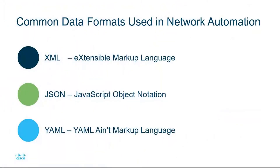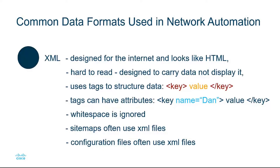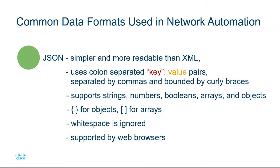The common data formats used in network automation are XML, JSON, and YAML. XML was designed for the internet and looks a lot like HTML. It's generally hard to read, as it was designed to carry data, not display it. It uses tags to structure the data, where the value is between the key tags. The tags can have attributes, white space is ignored, and site maps and configuration files often use XML files.